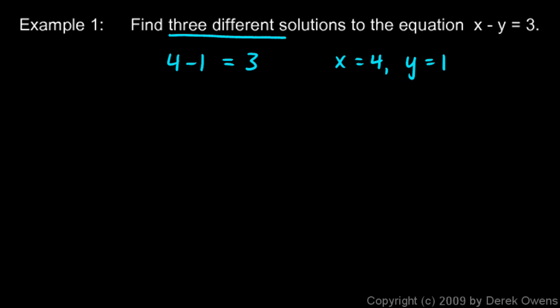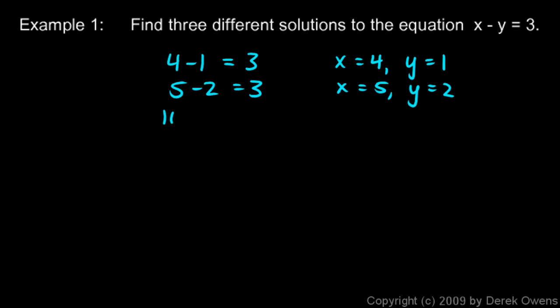We're told to find three different solutions, so let's find more. We could say 5 minus 2 equals 3, so another solution is x equals 5, y equals 2. And we could say 10 minus 7 equals 3, so x equals 10, y equals 7 is also a solution. You might have come up with different ones — that's okay as long as x minus y does in fact equal 3.